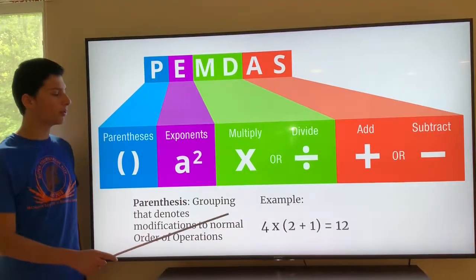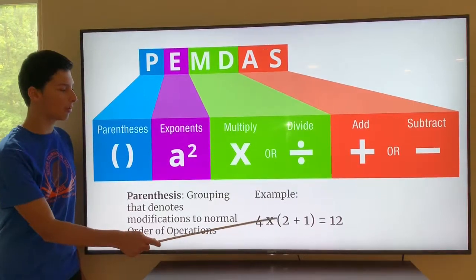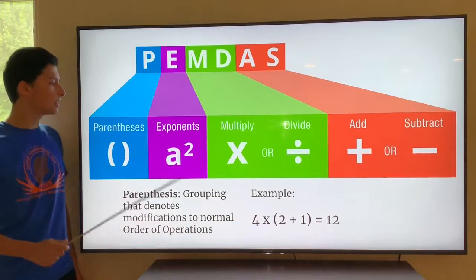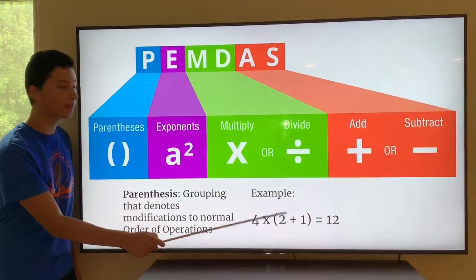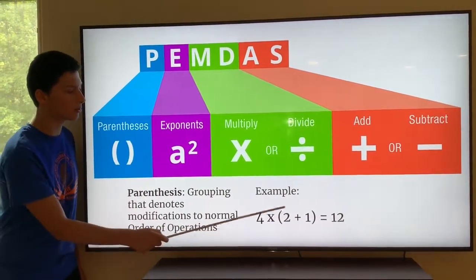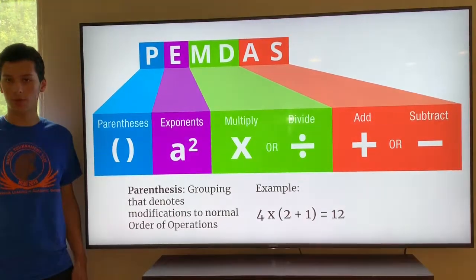For example, if you looked at the same example as before, four times two plus one, this time the person put parentheses around two plus one. Since P is at the beginning of PEMDAS, we would do the parentheses first. So two plus one, we would resolve that as three, and then we do four times three, which is twelve, because parentheses is at the beginning of PEMDAS and it's resolved first.